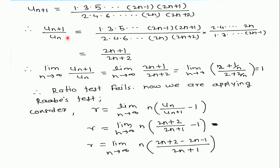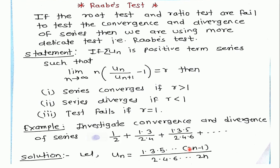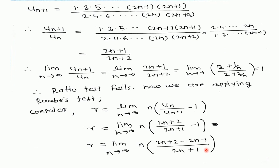Then we find the (n+1)th term. For this purpose, we add one extra term. After the term (2n−1) in the numerator, the next odd term is (2n+1). Similarly, in the denominator, the next even term is (2n+2). So UN+1 = (1·3·5·...·(2n−1)·(2n+1)) / (2·4·6·...·2n·(2n+2)).